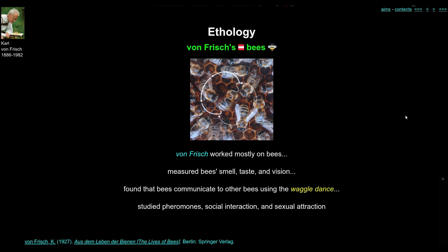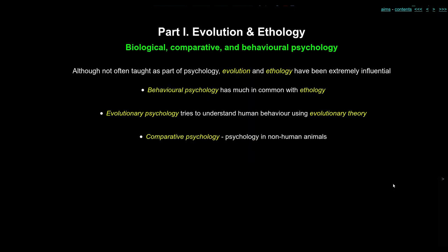Although evolution and ethology are probably not often taught as core parts of psychology, they've been really extremely influential in 20th century psychology. If you think about behaviourism, behavioural psychology, reward and punishment, there's an awful lot in common with ethology — it's really trying to break down the components of stimuli which elicit particular responses, trying to increase and decrease those responses and finding the ideal stimulus for particular responses.